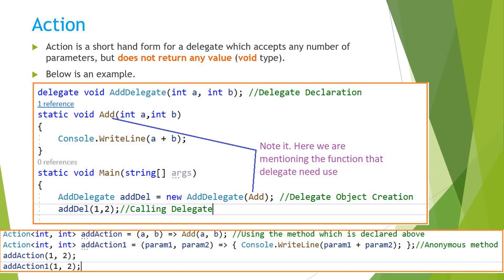You can assume it's a kind of method which doesn't return anything. So here we have the examples. Before these shorthand notations like Action, Func, and Predicate, if you had to write something where you need to pass a method — maybe for a callback or anything — the syntax used to be like creating a delegate, like here we have created a delegate with the name AddDelegate.